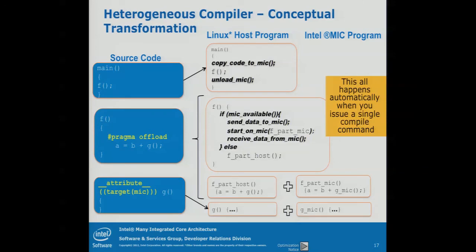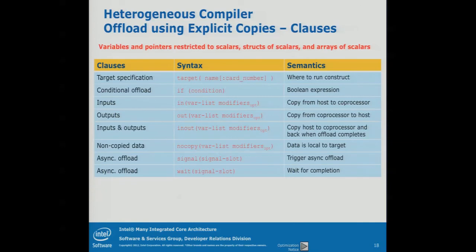For the G function, which is called from the offload and could be in a different source file, we added the attribute 'target mic' to tell the compiler to create a standard version of G for execution on the Xeon host, and a G_mic version running on the coprocessor.